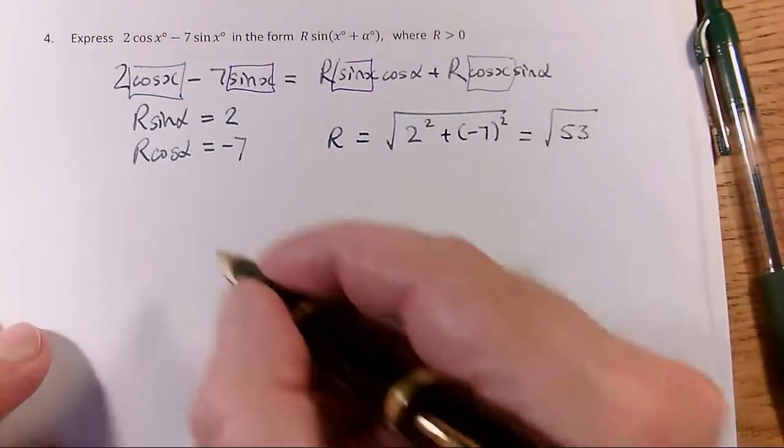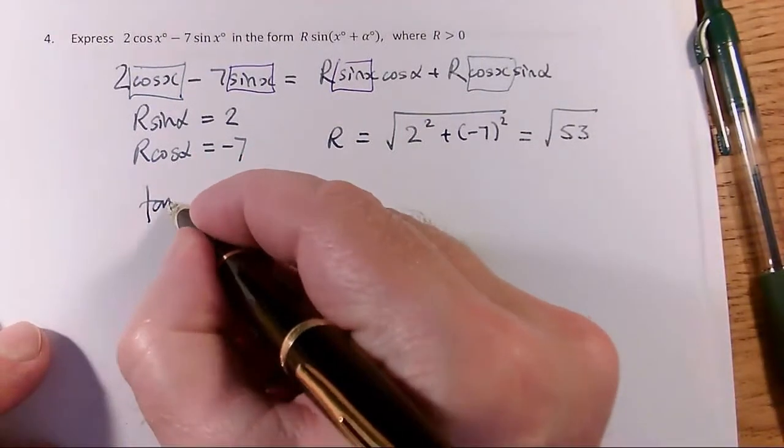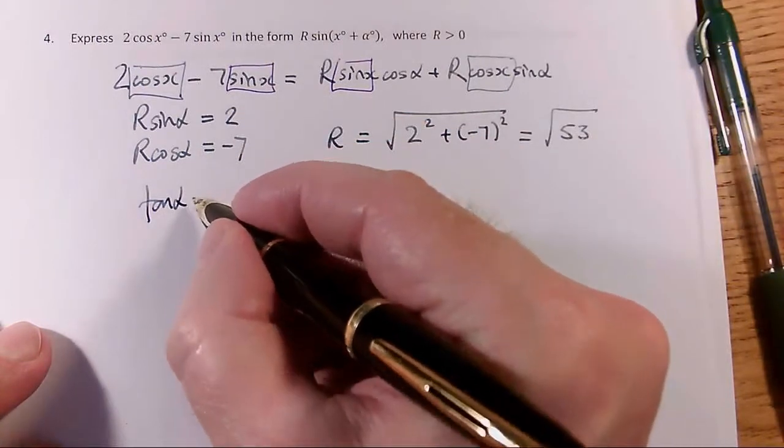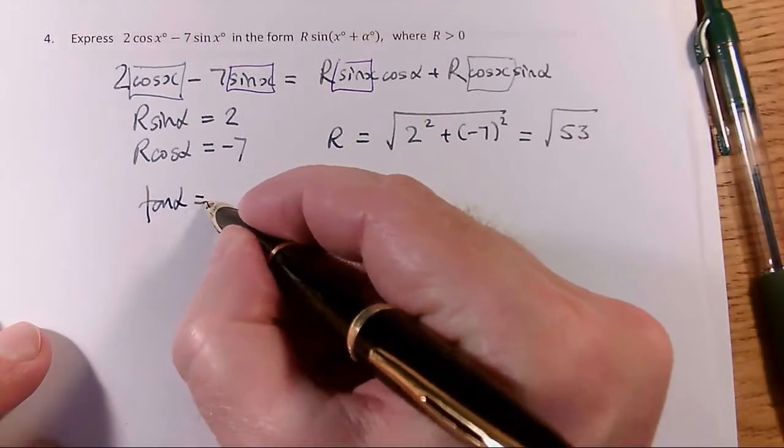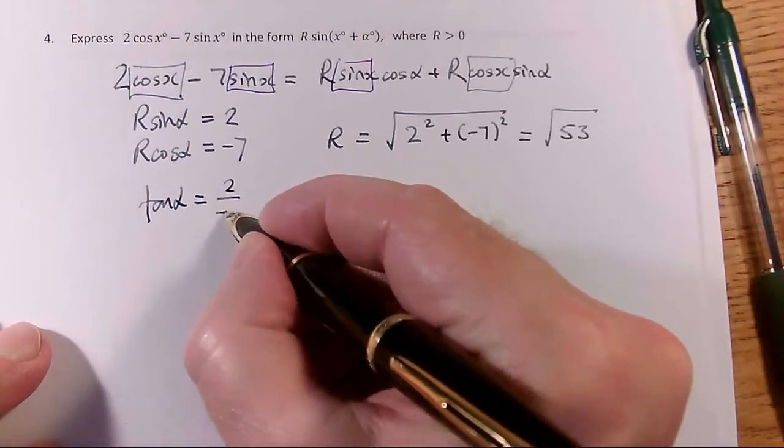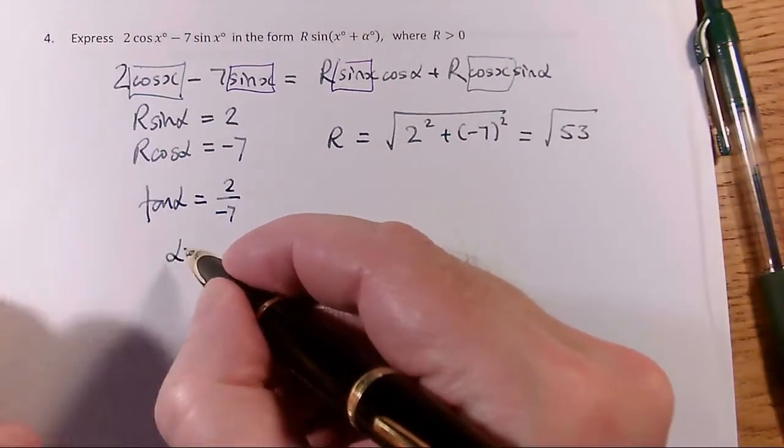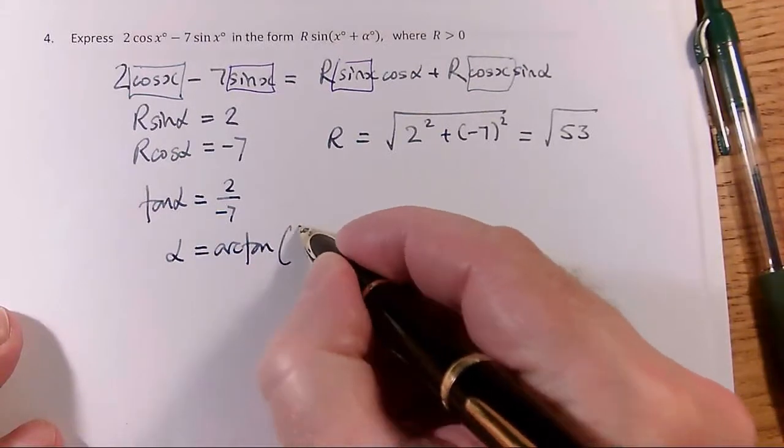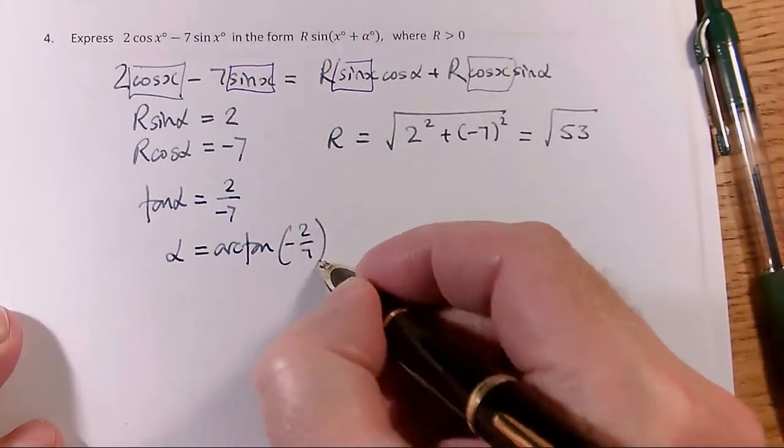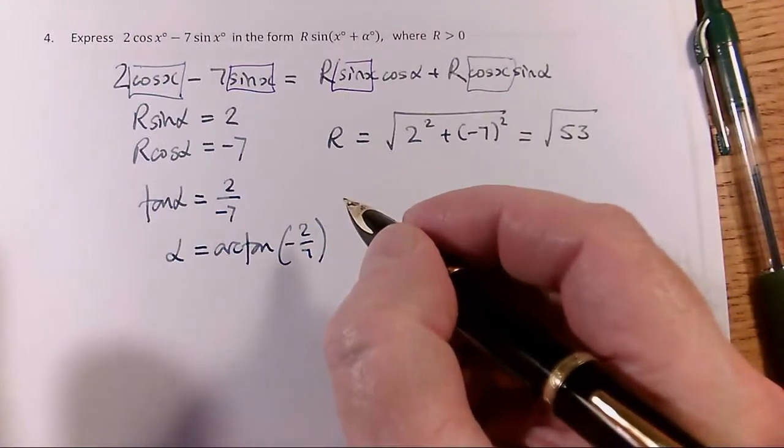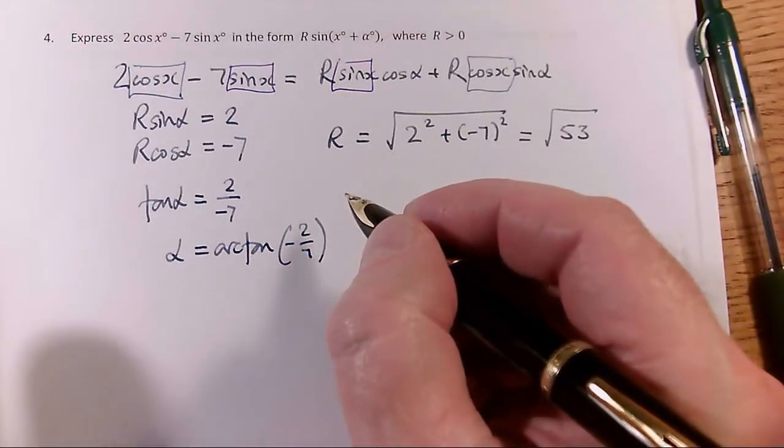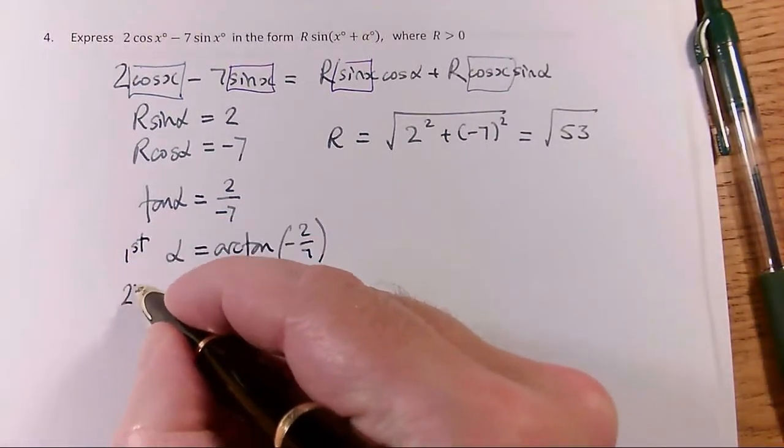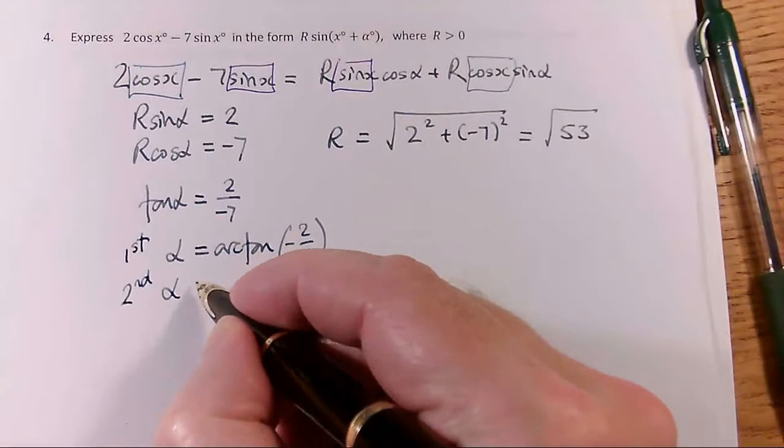That was the easy bit. Now, we can get tan alpha in the normal way. So tan alpha equals, well, I want sine on the top and cos on the bottom. So tan alpha equals 2 over minus 7. And I can get alpha, or I can get an alpha, by doing arctan in the normal way to minus 2 sevenths. However, I haven't got the guarantee, in fact it's not even true anymore, that alpha is acute. So I have to call this my first alpha, and I have to consider a second alpha.